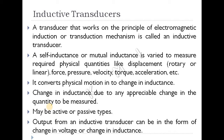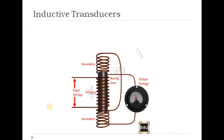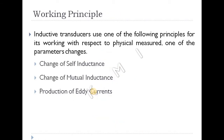Inductive transducers come in active and passive types. Inductive transducers are used with a moving core and a fixed magnetic field.